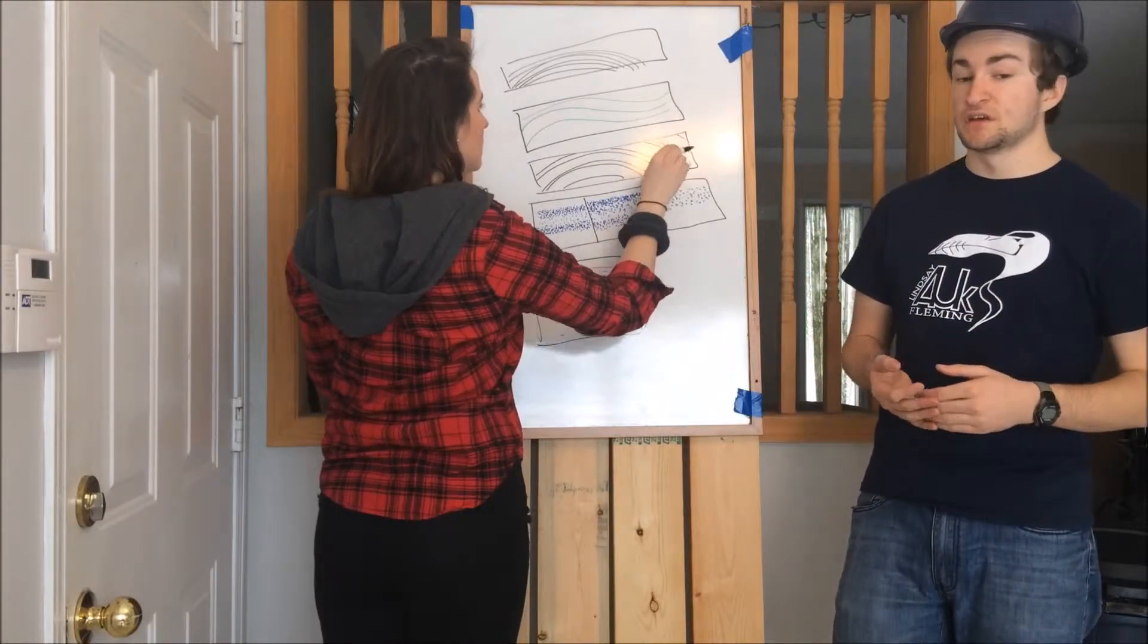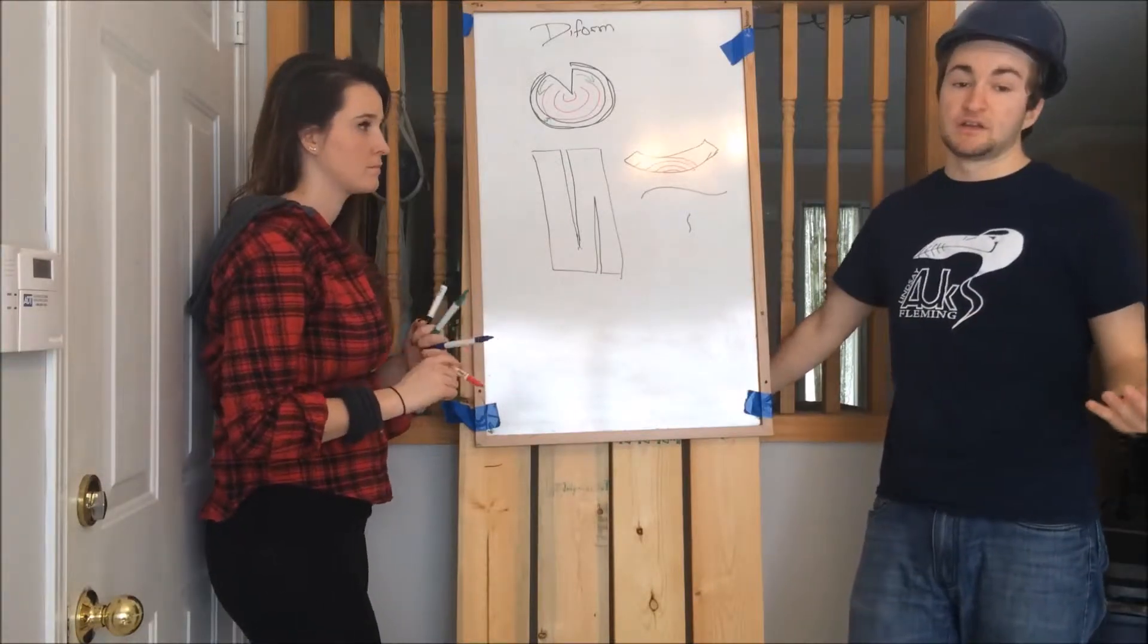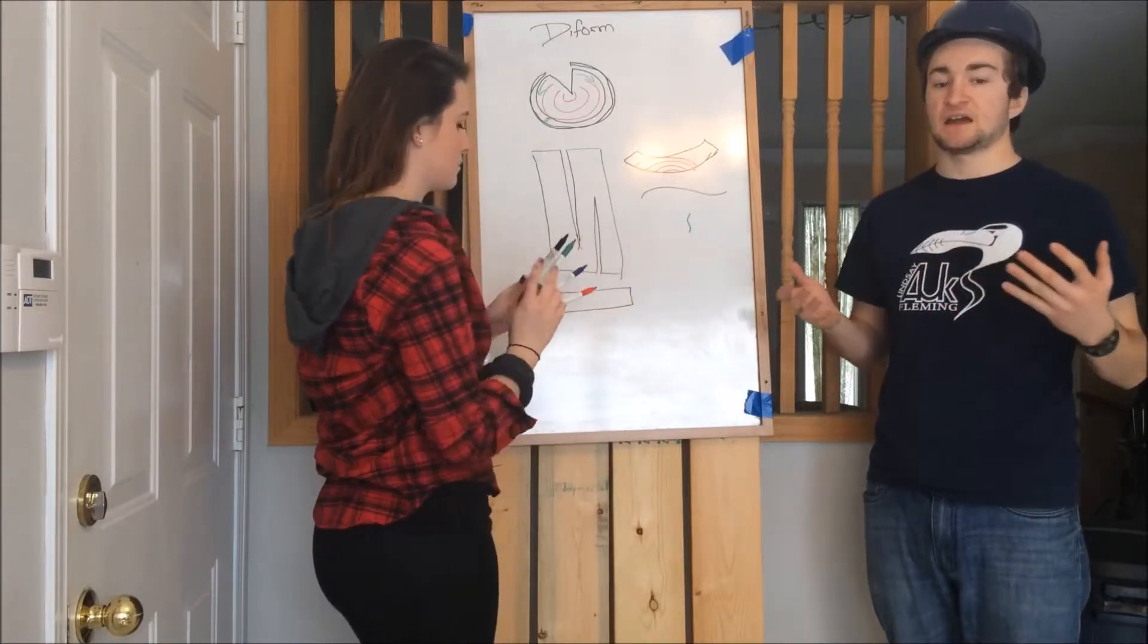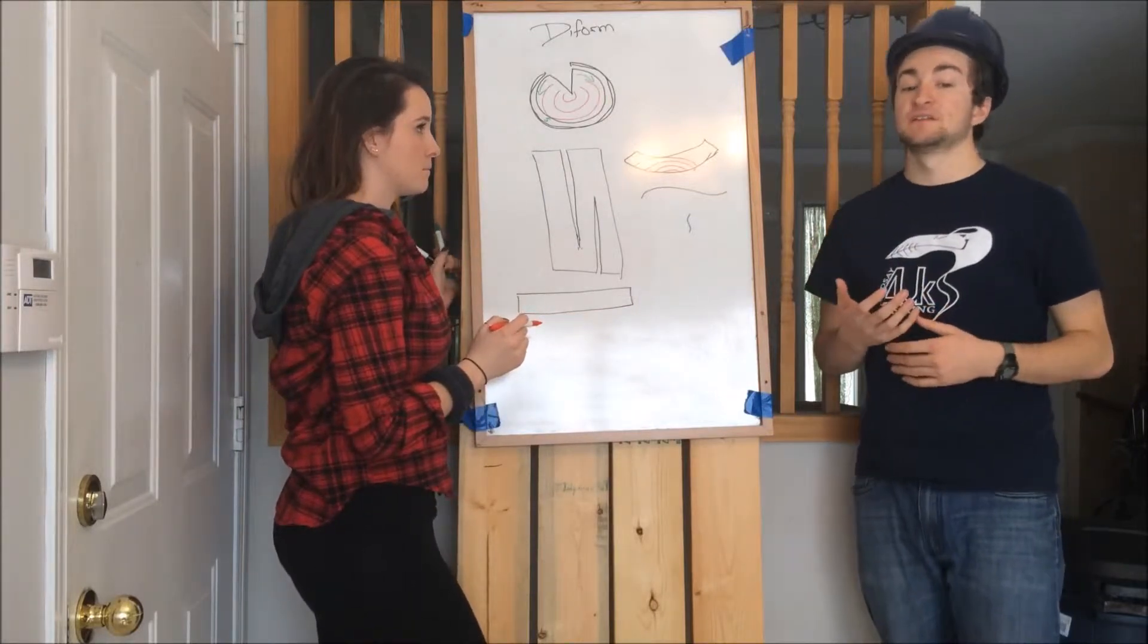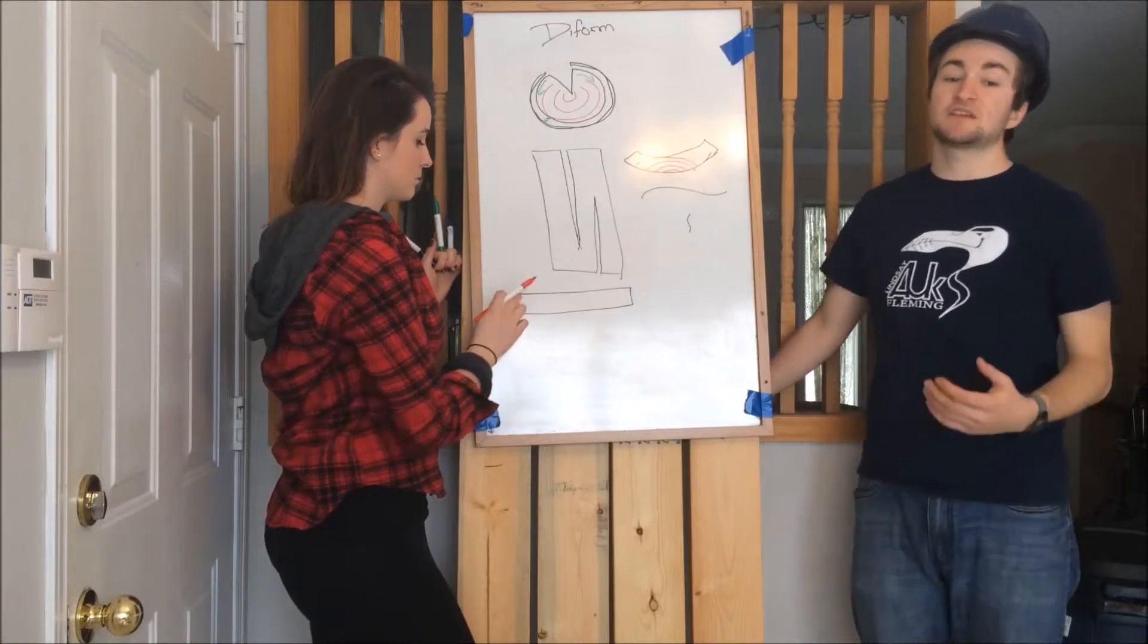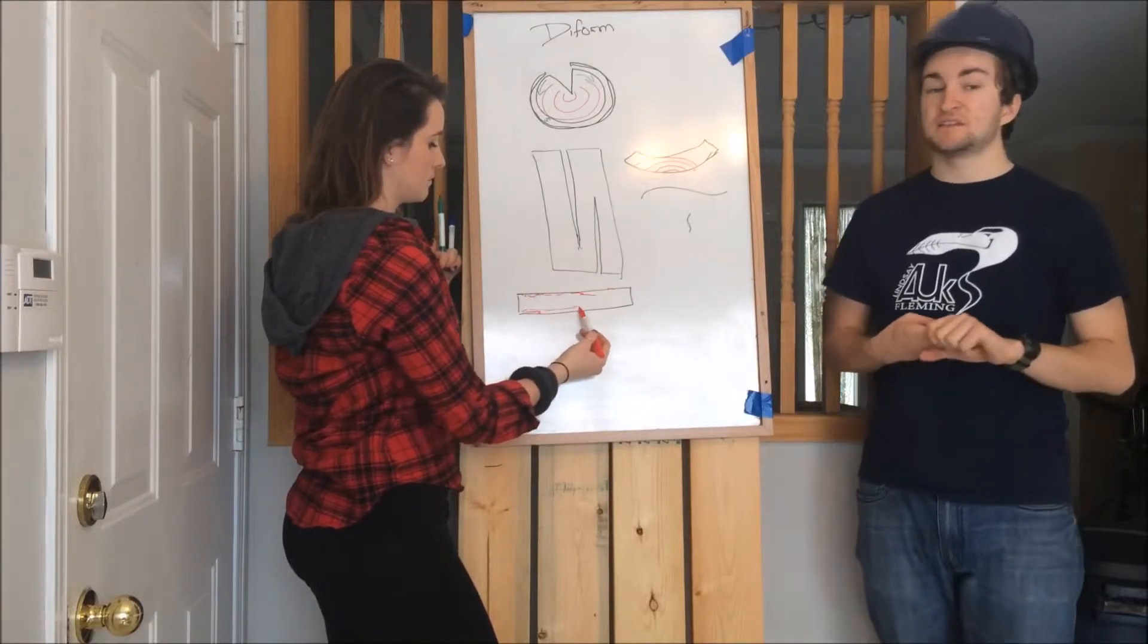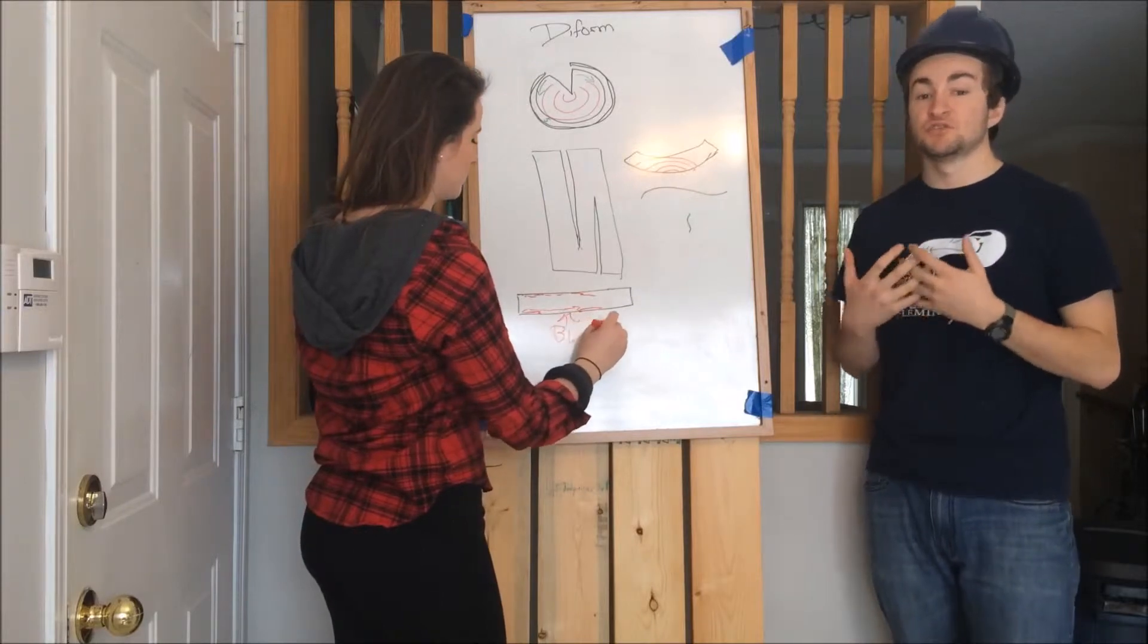Another thing you also deal with is weathering. Most lumber because it sits outside, just because they can't have a warehouse full of lumber ready to be sold, you're going to be dealing with weathering. Now this is the mechanical or chemical disintegration and discoloration of the surface of the wood. Exposure from light, the action of dust and sand carried by winds, and even stuff like snow storms are going to be causing weathering to your lumber.